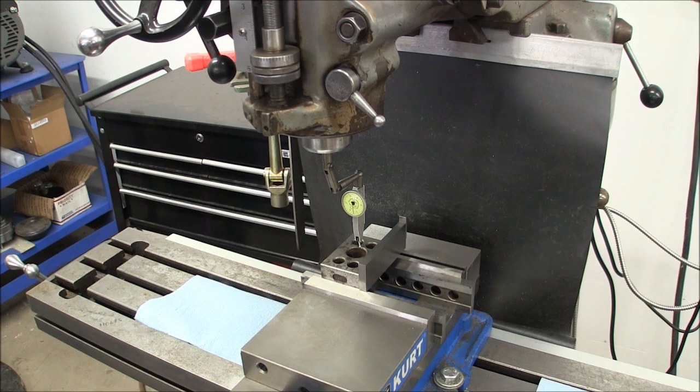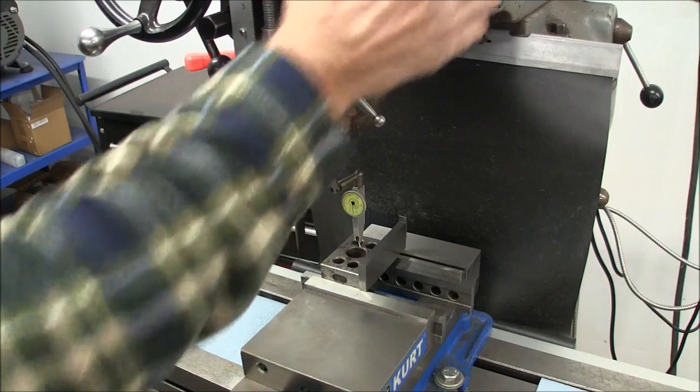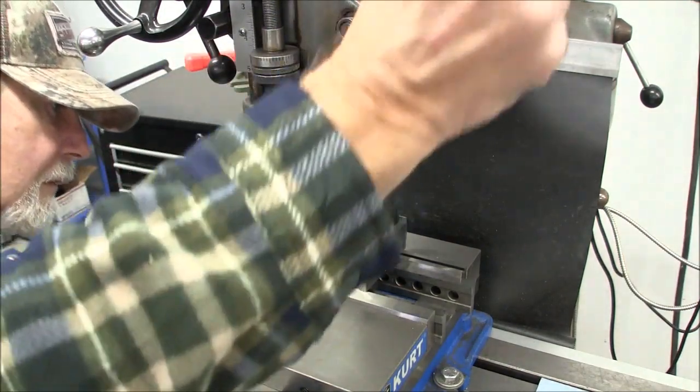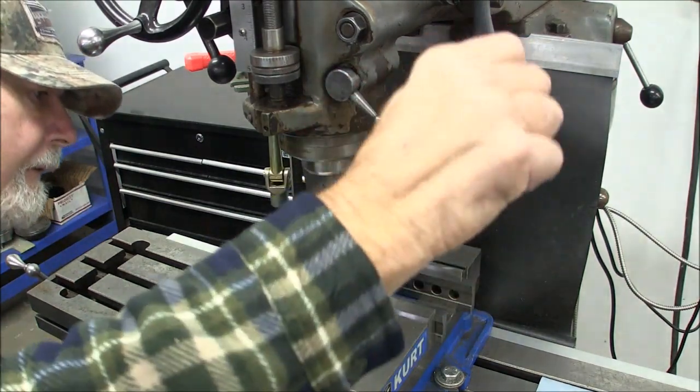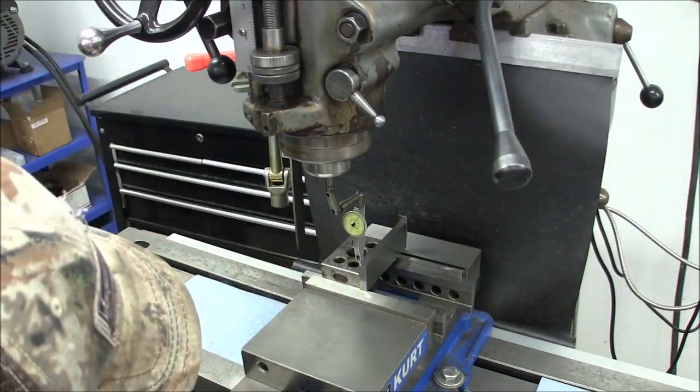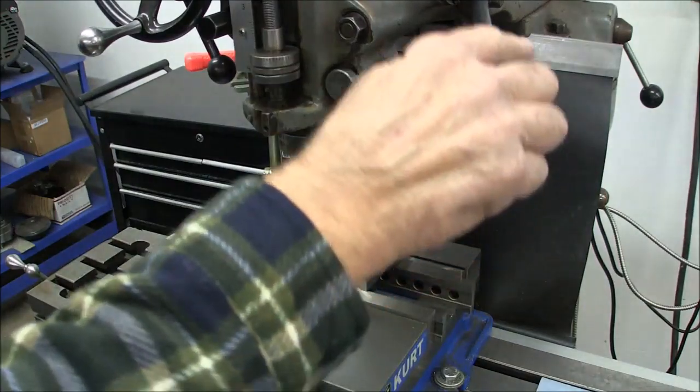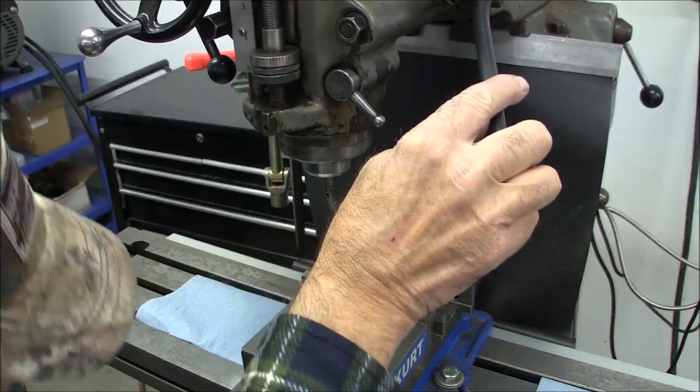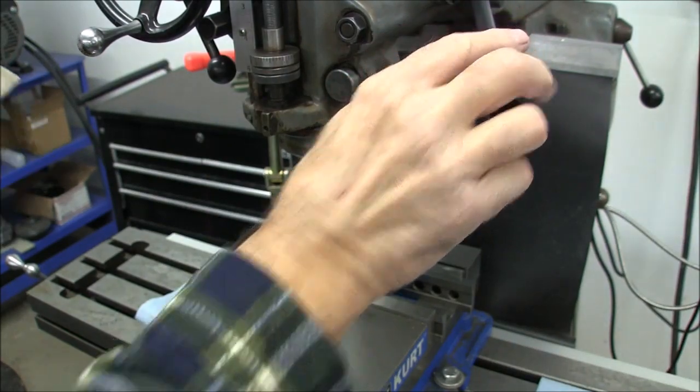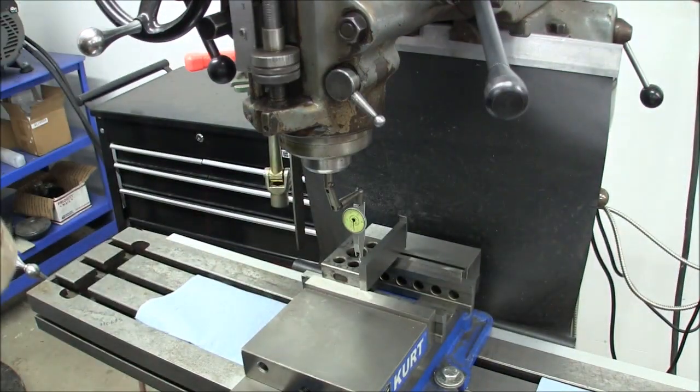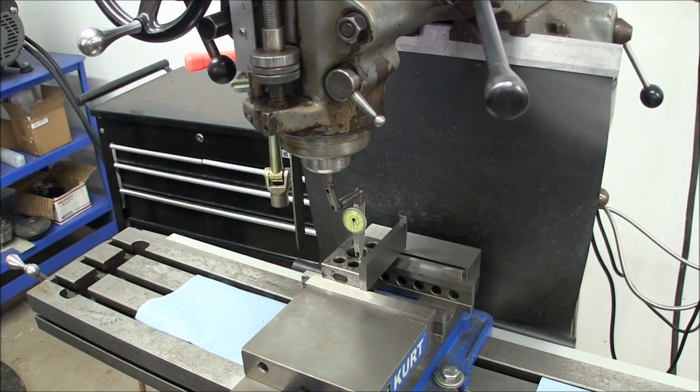So the first thing we'll do is come down and zero out our indicator on the face of the 4-inch gauge block. Okay, that's as close as I can get it. Check it for repeatability again. Coming right back to zero. Now I lift up my indicator and zero out my DRO.